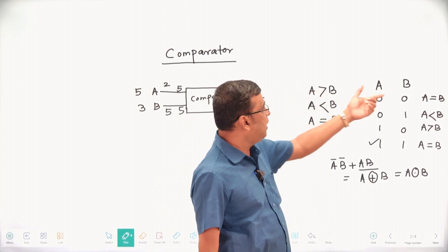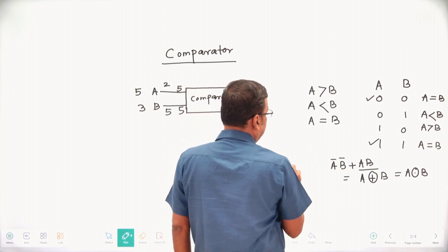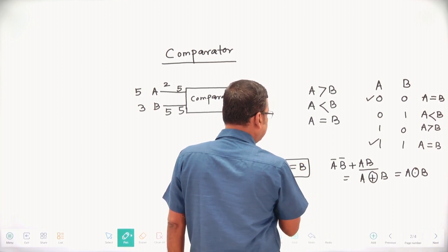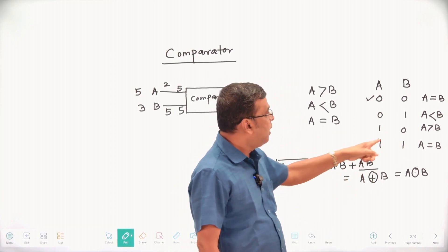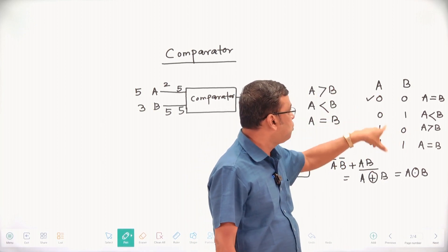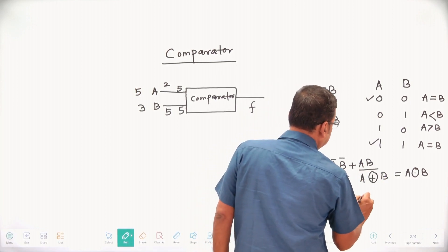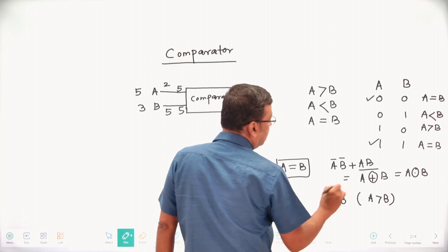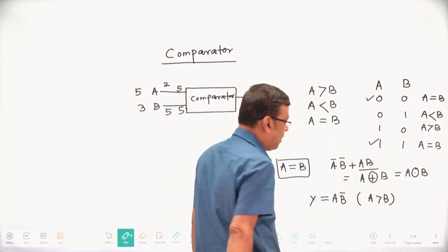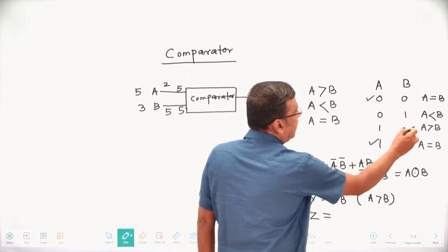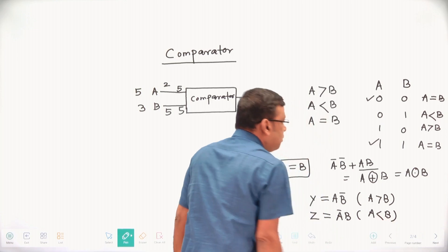If it is an equality condition, A equal to B — that is 00 and 11 — the condition is A XNOR B, which is A-bar B-bar plus AB. In case of one bit greater than another bit in a single-bit comparator, A greater than B, that is your AB-bar. If I introduce variable Y: Y equals A greater than B, that is AB-bar. If I introduce another variable Z: Z equals A less than B, that is A-bar B. This is all about your single-bit comparator.